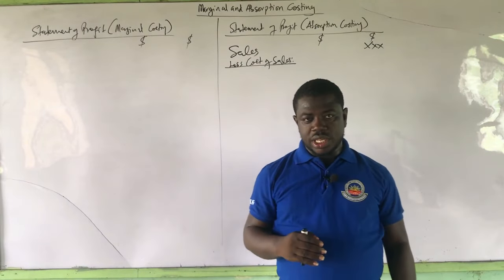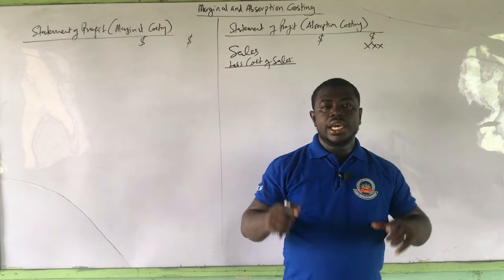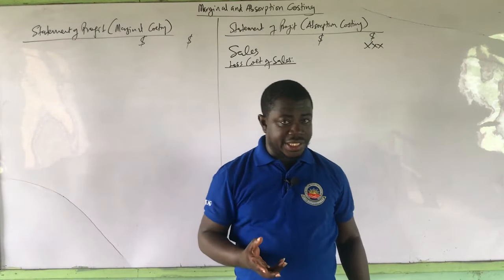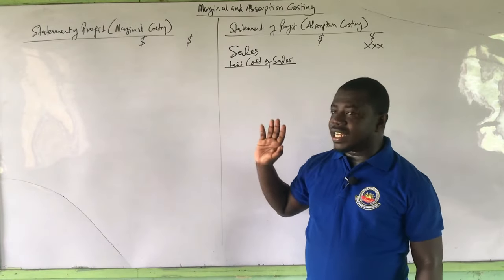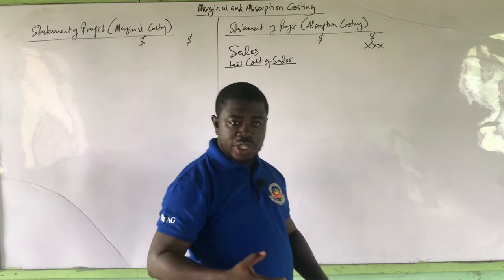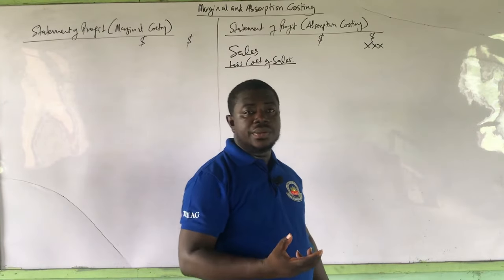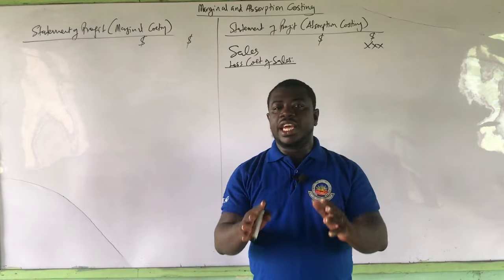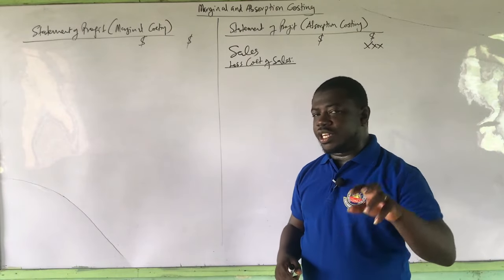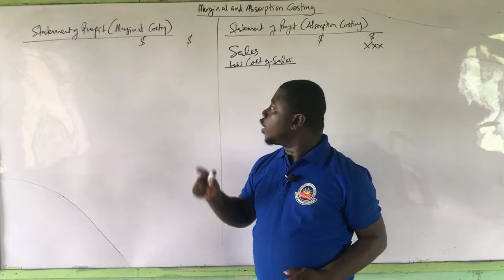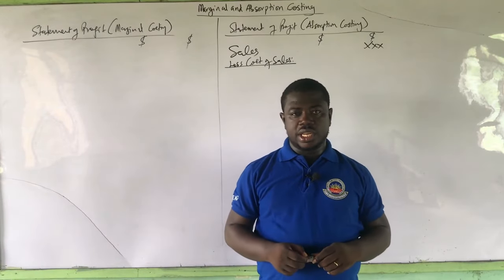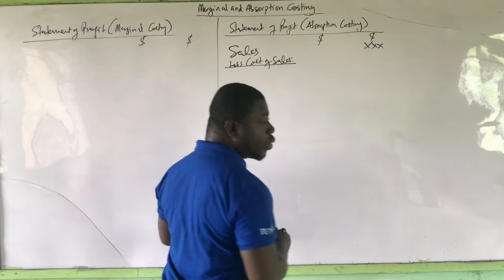The idea between marginal and absorption costing is about how to ascertain production costs. The organization in question will definitely be a company that is producing their own goods. We have learned from manufacturing accounts in financial accounting that when the company is manufacturing their own goods, instead of net purchases being added to the opening inventory, we would rather add the cost of production. So if there is any opening inventory, we add the production cost, and that is exactly what we are going to do to get our cost of sales.